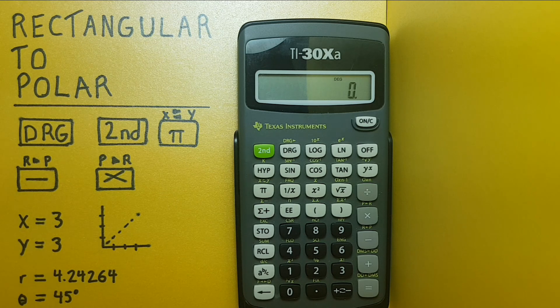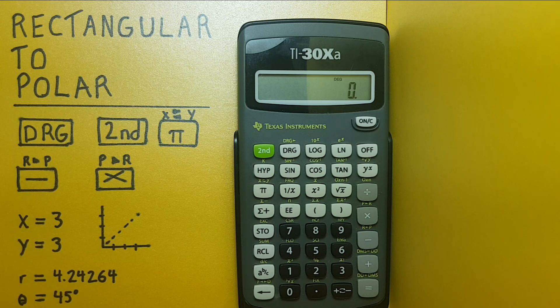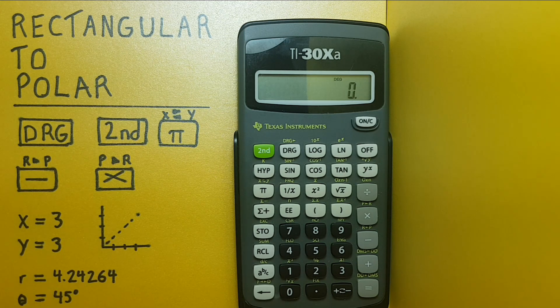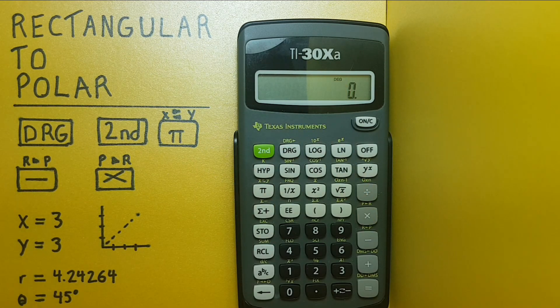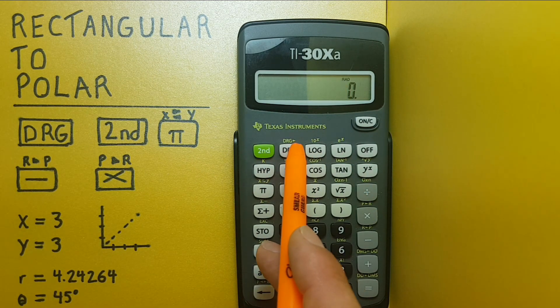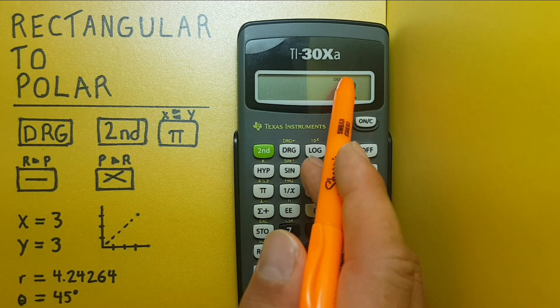All right, what if we wanted to go in the opposite direction? Let's say we had polar coordinates and we wanted to convert them to rectangular. Well, in this case, we would make sure we're in degrees, which we do, which by the way you can convert by pressing this button. Make sure that says DEG.